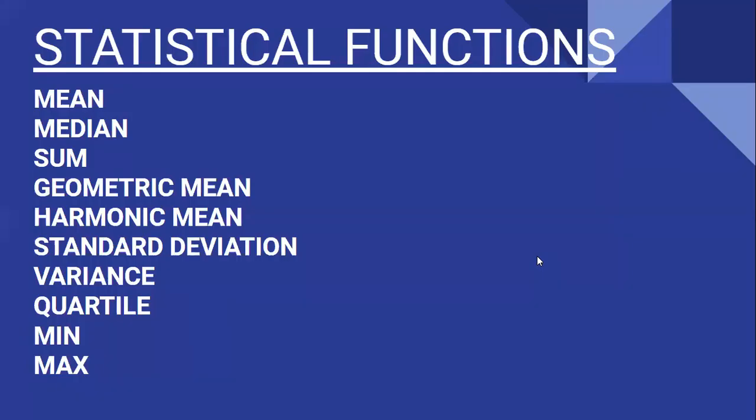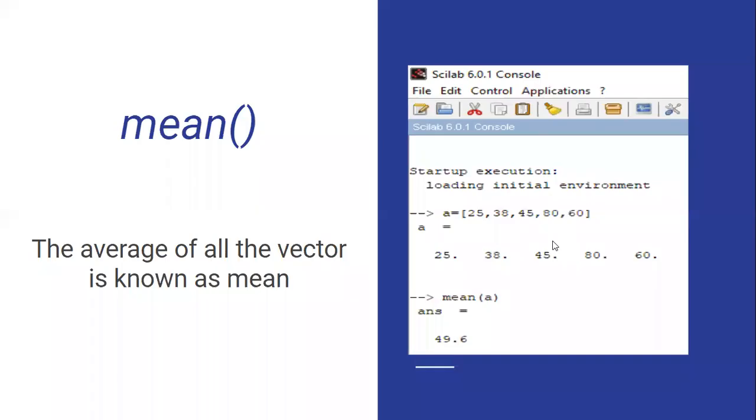Today we are going to discuss some of the functions of Scilab. One category is called statistical functions. There are a few statistical functions: mean, median, sum, geometric mean, harmonic mean, standard deviation, variance, quartile, minimum, and maximum.